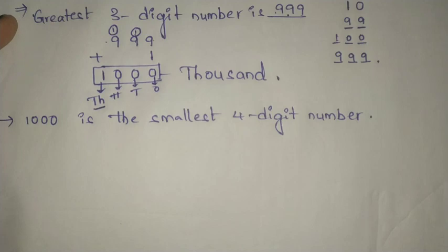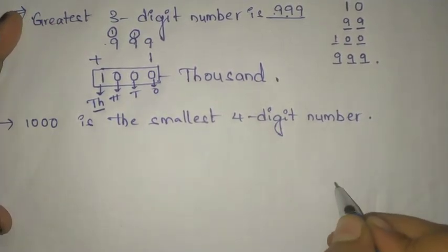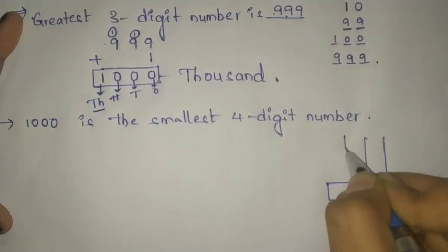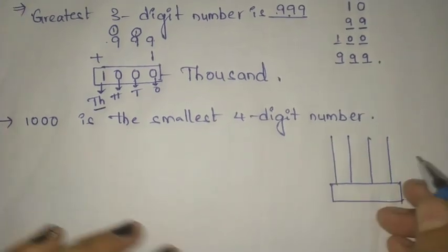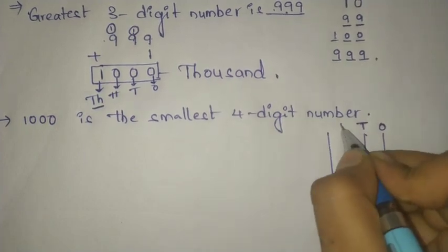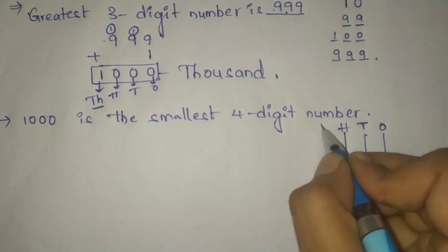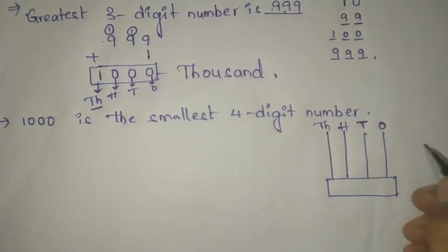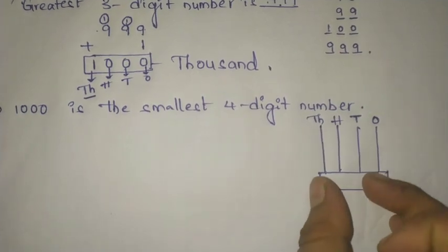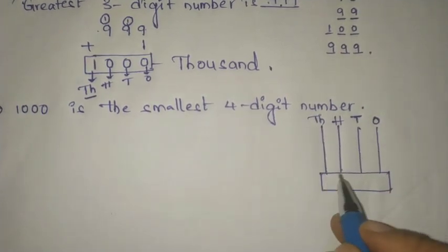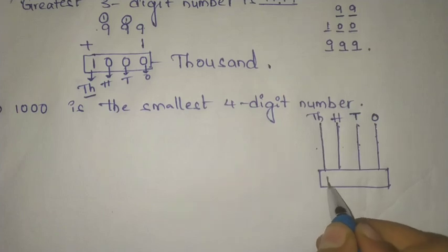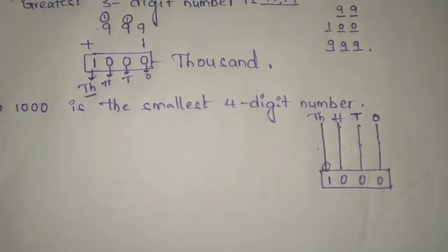Here we will draw an Abacus for 1000. We need 1, 2, 3, 4 strips. This is the ones strip, this is the tens strip, this is the hundreds strip, and this is the thousands strip. To show 1000 we use an Abacus with four strips: ones, tens, hundreds, thousands. Here we will put one circle on the thousands strip.